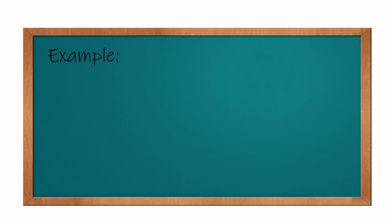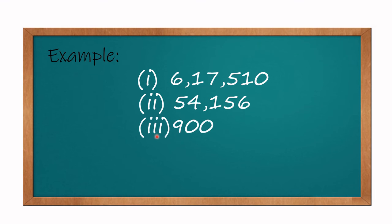Now let's see some examples. 617,510 - here the last digit is 0, so this number will be divisible by 10. Next, 54,156 - here the last digit is not 0, so this number will not be divisible by 10.